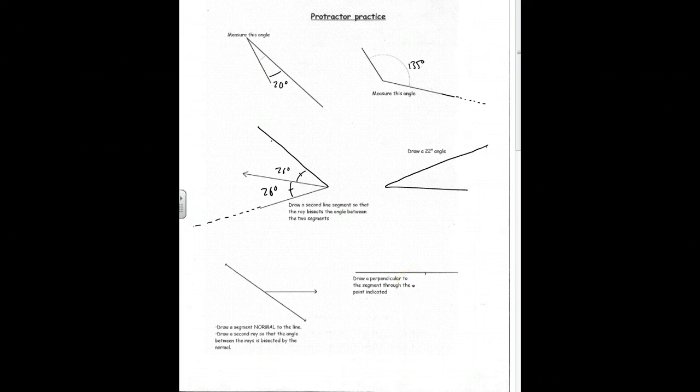Draw a perpendicular to the segment through the point indicated. The easiest way to do this, you might be tempted to put your protractor down like this and measure up to 90, and that'll work, but then you'll have to put a dot and then shift your protractor again this way so that you can use it as a straight edge.